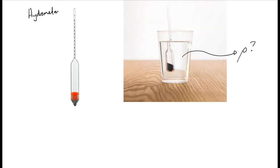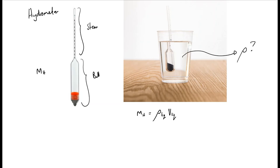Looking at this example and understanding buoyancy, we know that the mass of the hydrometer equals the density of the fluid multiplied by the volume of the fluid being displaced by the hydrometer. One can easily determine the mass of the hydrometer by just putting it on a balance. The volume for the hydrometer will be the volume of the ball plus the volume of the stem. The volume being displaced is the volume of the ball plus some part of the volume of the stem.